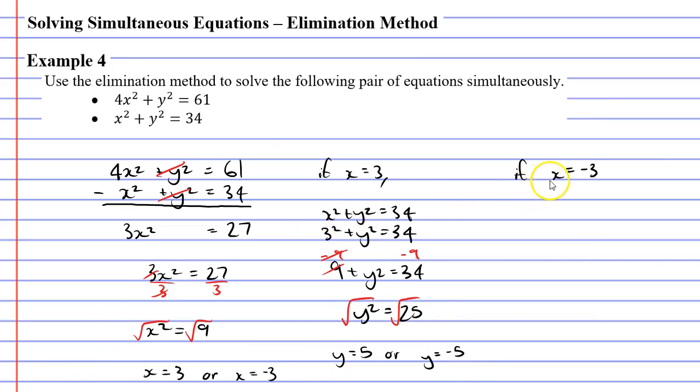All right, let's look at what happens when x is -3. And some of you might have noticed that we're going to get the same result here, but we'll go through the working out anyway. If x is -3, we have (-3)² + y² = 34. Now, -3 squared is 9, or positive 9. So 9 + y² = 34, and we are at the same point we were previously.